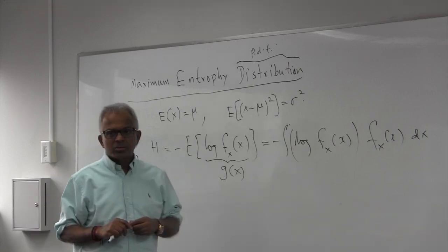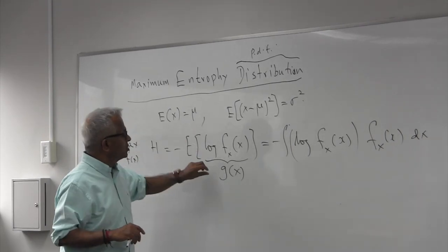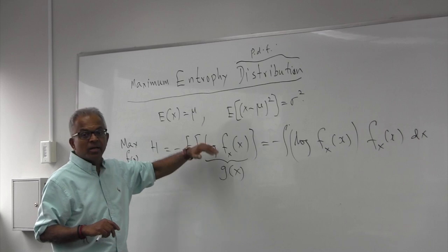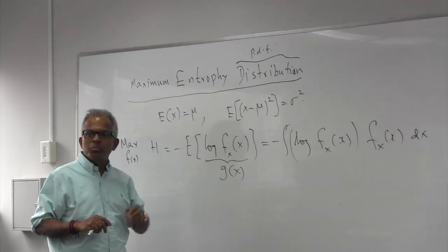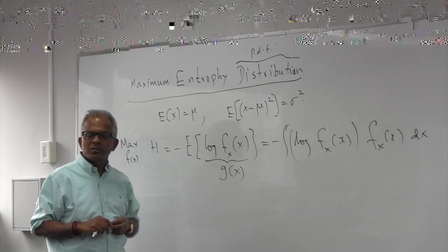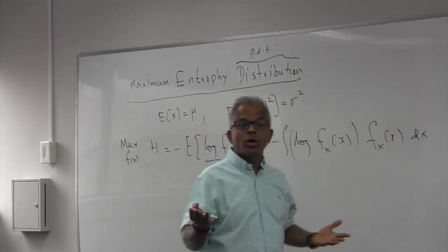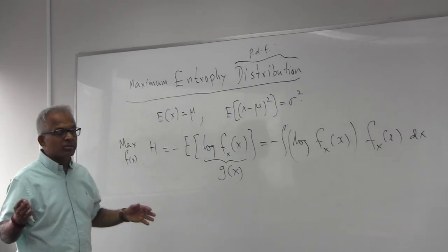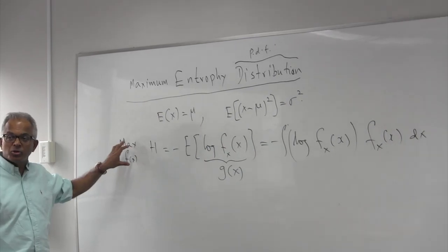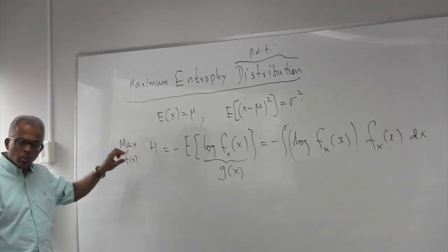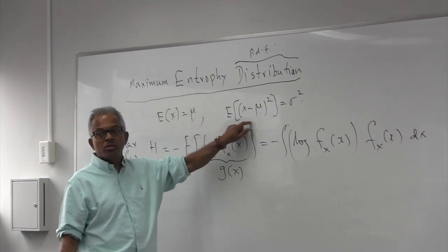Mean and variance is given. Somehow, on maximization of this, we want to bring in these conditions. The best way to bring in is through Lagrange multipliers. This is a constraint optimization problem. Why is it optimized? Because we are trying to maximize this. Why is it constrained? Because we have these two constraints.